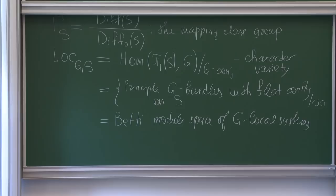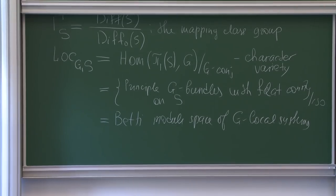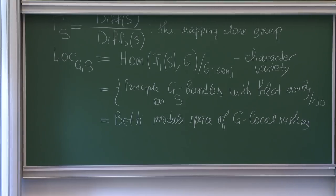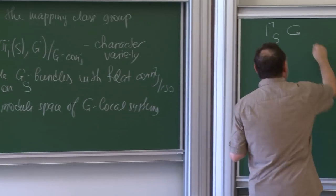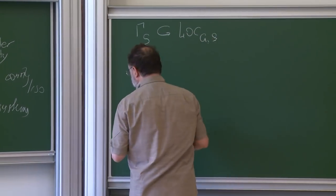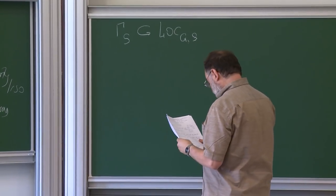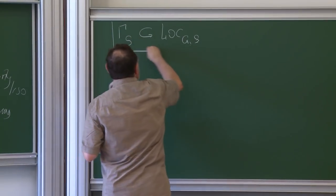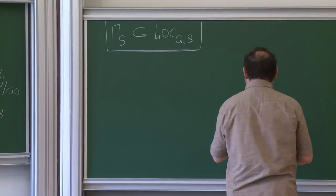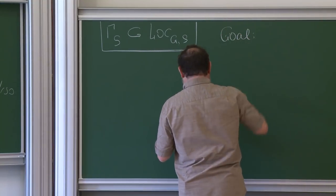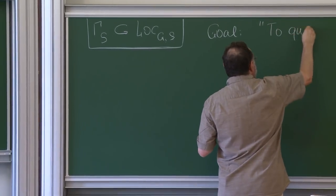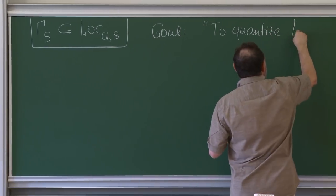Why is it called the character variety? I don't know — I'm not the one who made this name. You can take characters — I don't know. The key point is that the mapping class group acts on this character variety of local systems in an obvious way, because it acts by diffeomorphisms of S. Whatever we want to do, we want to do in a Gamma-S equivariant fashion. The goal, roughly, is to quantize this local systems character variety.